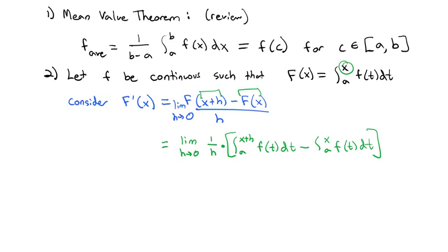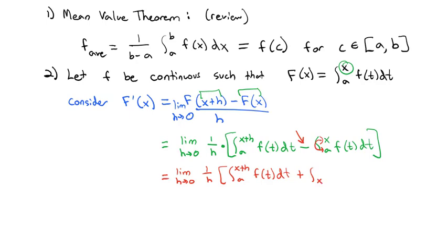We're going to massage this a little bit. First, we change the subtraction to addition, using the property that switching the order of integration changes the sign. So we get the limit as h goes to 0 of 1/h times the integral from a to x plus h of f(t) dt, plus the integral in the opposite order — from x to a — of f(t) dt.